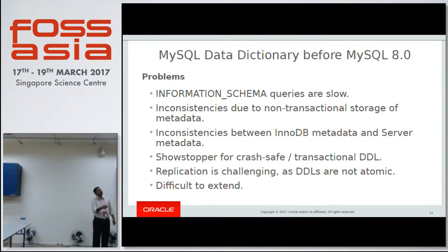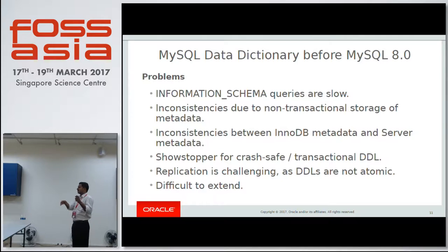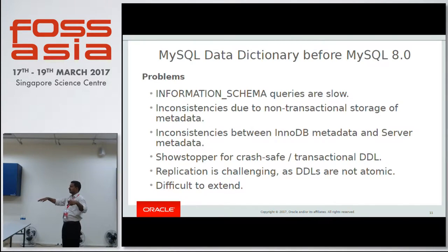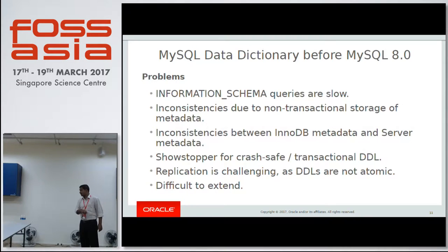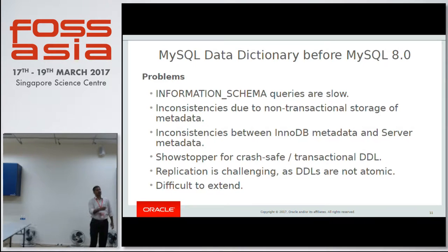One major concern is information schema query performance. The way it works today is when you fire an information schema query, we internally create a temporary table. The server gathers metadata from flat files, MyISAM tables, or InnoDB tables, fills in that temporary table, and only then will the user see the data. You can imagine how much time a single information schema query would take, and if your database instance is large, the time taken is huge. This is one of the major problems.